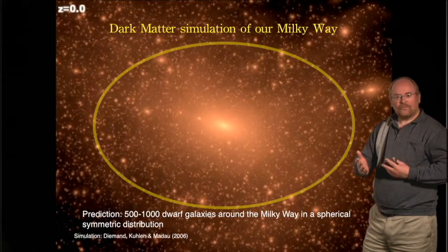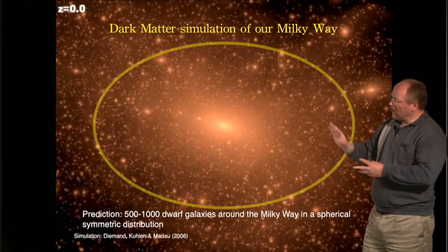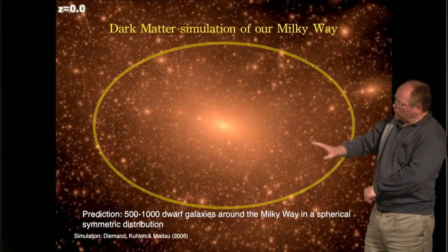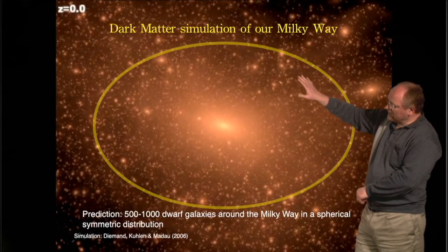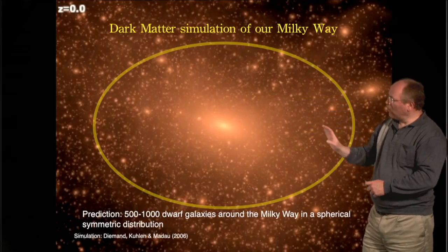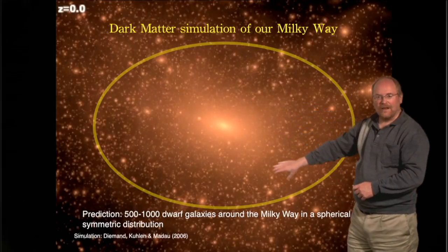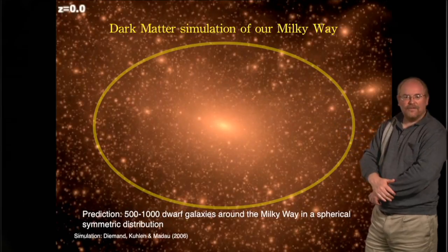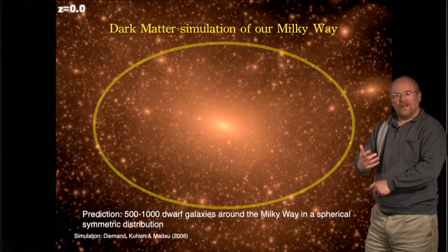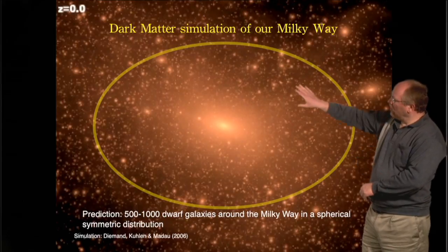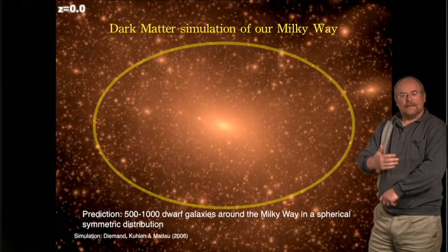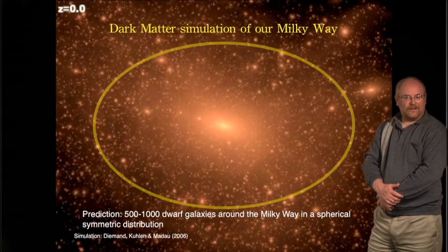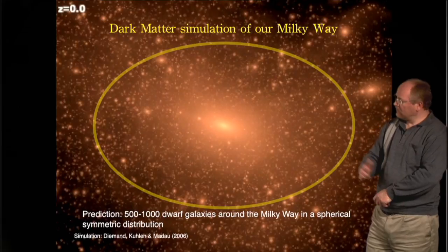There are two fundamental observations that come out of these supercomputer simulations. Namely, we have the number of objects that we expect — the number of dark matter sub-halos — around the Milky Way: about 500 to 1,000 objects that look very small because of this dark matter size, expected around the Milky Way and distributed in a spherically symmetric distribution, as you can see here.